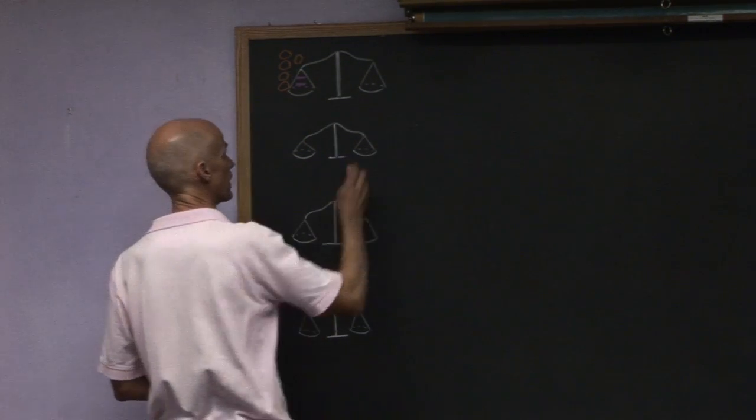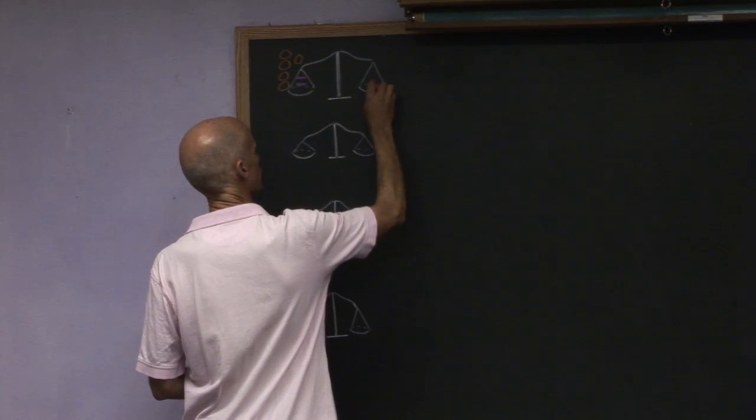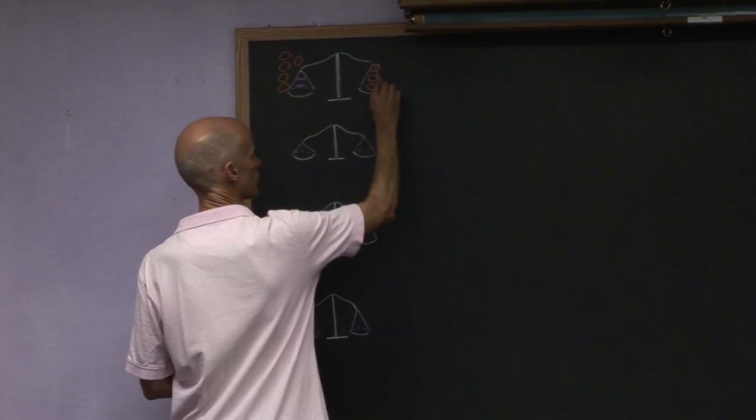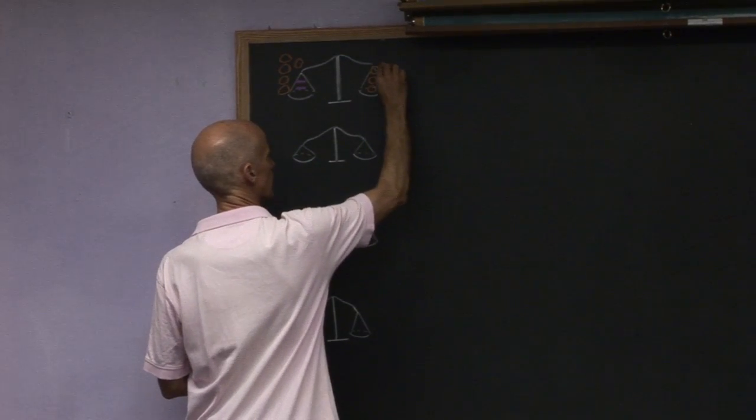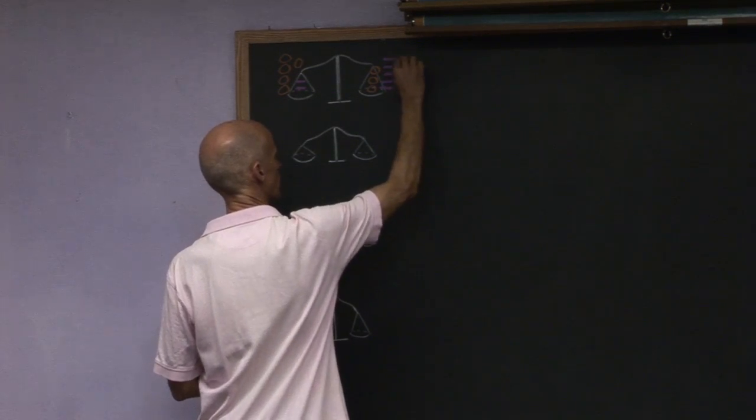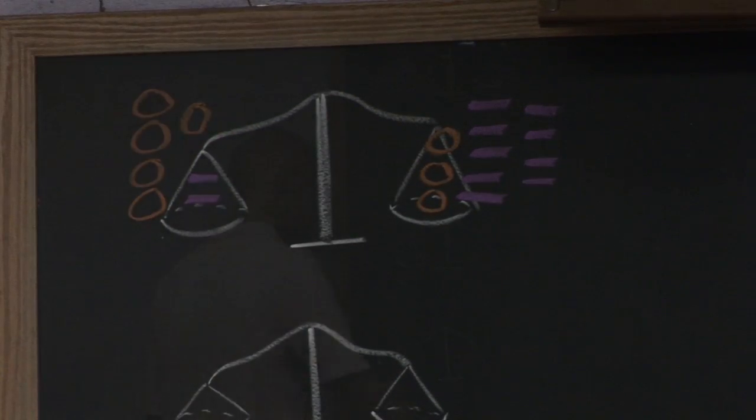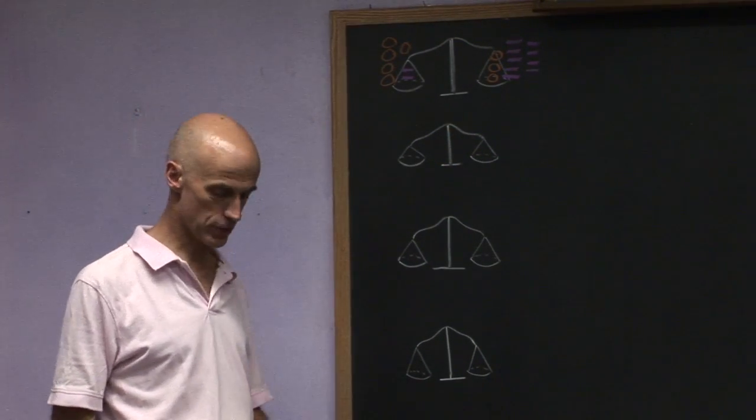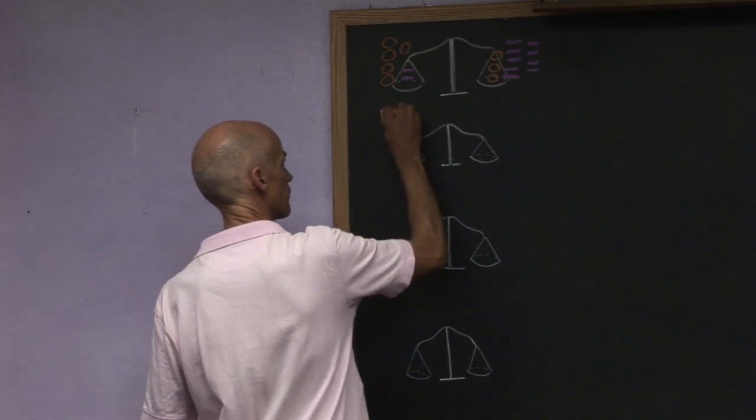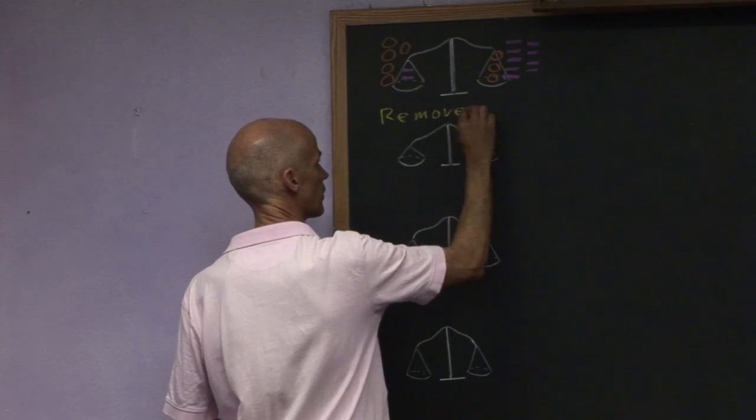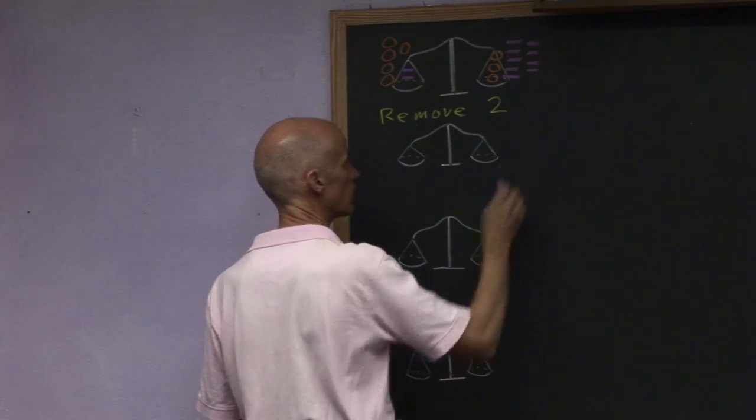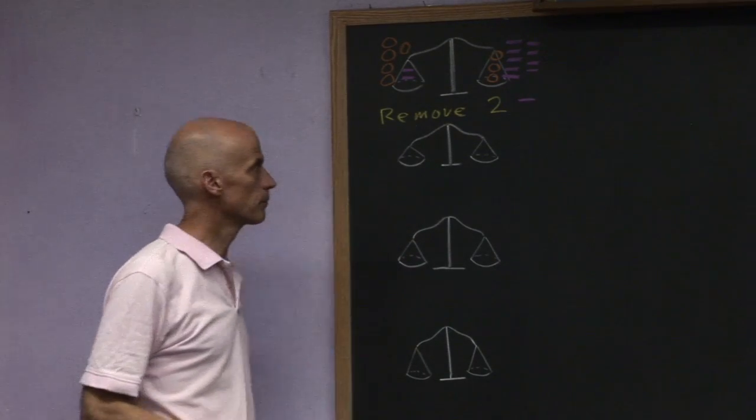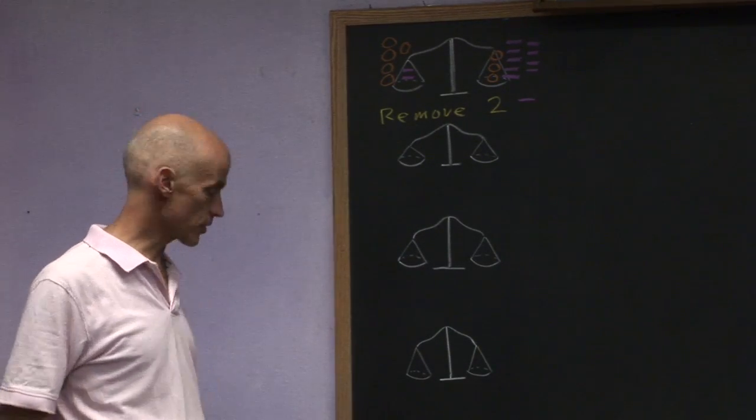and we had two hex nuts, and then on the other side we had three sacks and we had nine hex nuts. And so what did we do next? The next thing we did is we removed two hex nuts from each side.